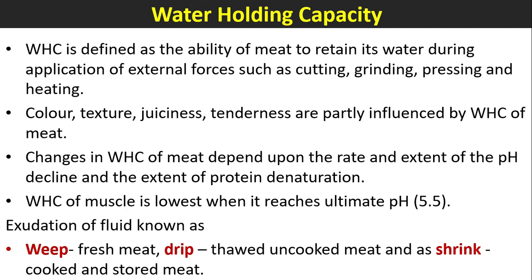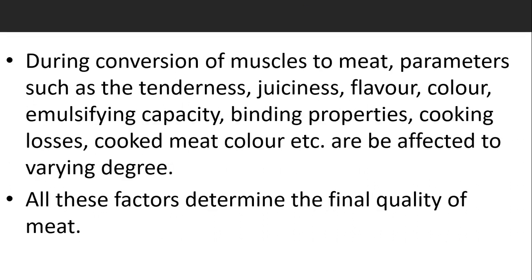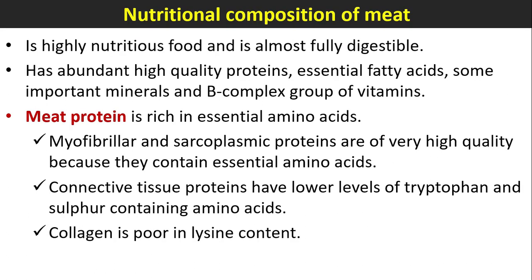Changes in water-holding capacity depend upon the rate and extent of pH decline and the extent of protein denaturation. Water-holding capacity of muscle is lower when it reaches an ultimate pH of 5.5. Exudate from fresh uncooked meat is known as drip, and from cooked and stored meat is known as shrink. During conversion of muscle to meat, parameters such as tenderness, juiciness, flavor, color, emulsifying capacity, binding properties, and cooking losses are all affected to varying degrees, determining the final quality of the meat.